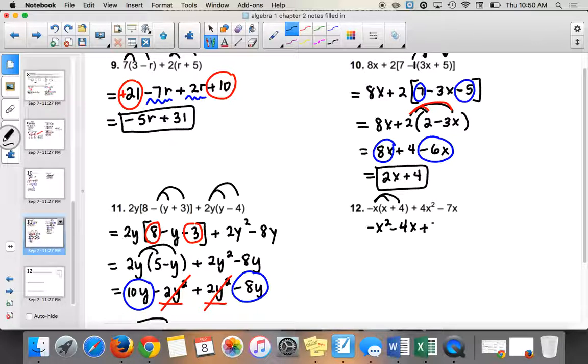Then you have plus 4x squared and then minus 7x. So if you do the negative x squared and you combine it with a positive 4x squared, you should get positive 3x squared. And then you take your negative 4x and your negative 7x and combine them and you get negative 11x.